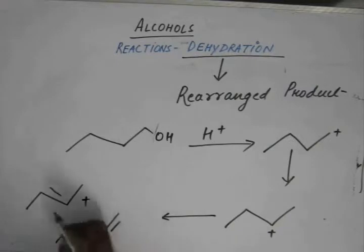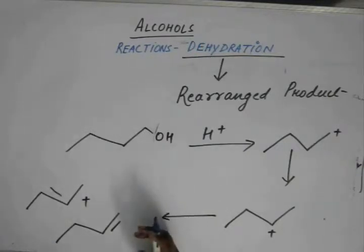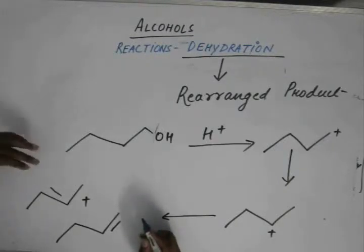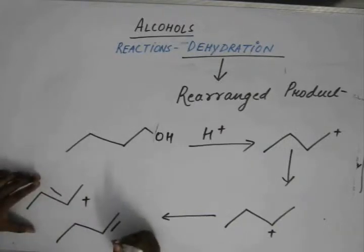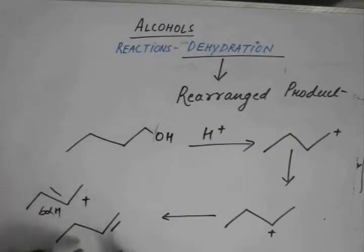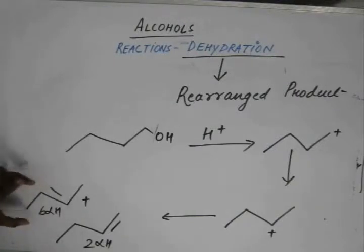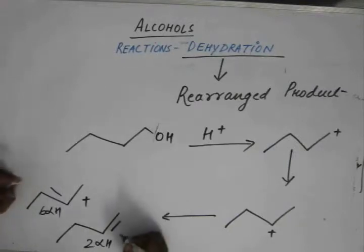By Saytzeff rule, this is a more stabilized product than this. I would suggest you not to memorize those names of the rules; rather try to understand why this alkene was stabler than this. This alkene has 6 alpha hydrogens and this alkene has only 2 alpha hydrogens.